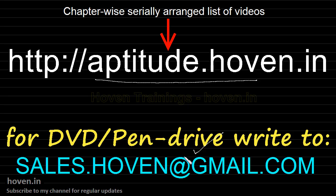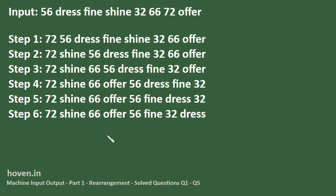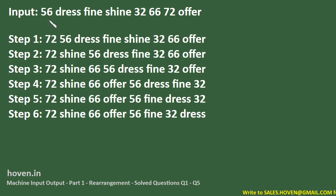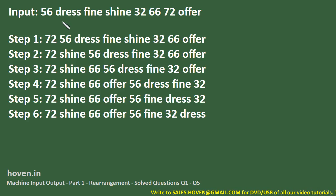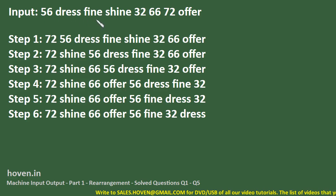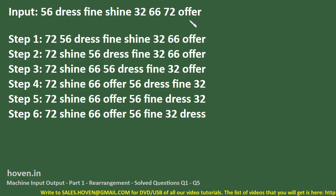Thank you for your support once again. Let us study the machine input and output type of questions. In these questions, one input is given to you. This input usually consists of numbers and some words. For example, this input is: 56, dress, fine, shine, 32, 66, 72, offer.